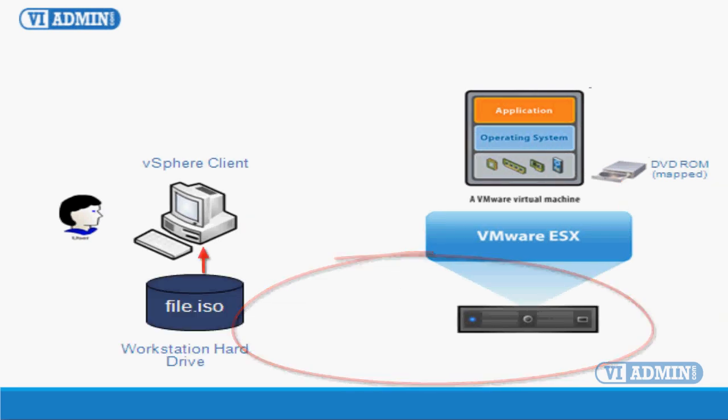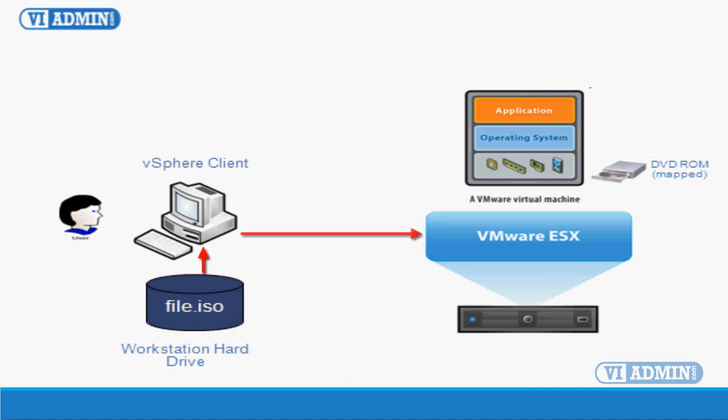The third option, called datastore ISO, is when you use an ISO file that is already uploaded on the ESX server local hard drive or a shared storage SAN. The last option is to use an ISO image located on your local workstation hard disk.